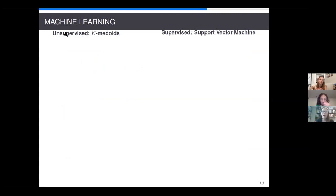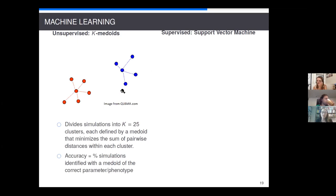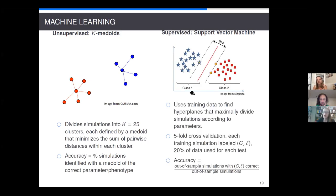Now, once we have these feature vectors we can feed them into machine learning algorithms. And we use two approaches. One is an unsupervised approach k-medoids and then another supervised approach support vector machines. Okay, so in k-medoids we defined k equals 25 clusters because we had 25 different parameters where each of the medoid is going to minimize the sum of the pairwise distances. And then we assess accuracy based on is a simulation that's assigned to a cluster of a particular medoid. Does it actually have the correct parameter or phenotype? We also did support vector machines where we use some of our training data to find hyperplanes that divide simulations according to parameters. And we did a five-fold cross-validation where we exclude some of our test data and then our accuracy is based on any simulation that's excluded or that is our out-of-sample simulations over the total number of out-of-sample simulations.